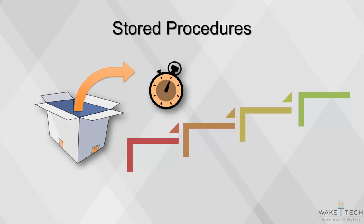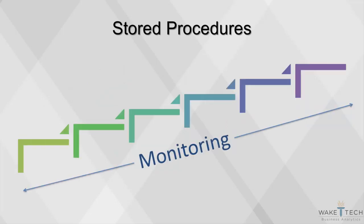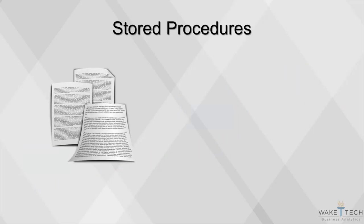Instead of an analyst having to replicate an analysis manually every time new data is captured, a stored procedure will execute. The stored procedure is a type of algorithm that runs according to a schedule and executes a series of steps that the analyst sets up in advance. Usually these steps will be in the form of code, but new software programs allow analysts to build stored procedures without having to write code. Once code has been productionalized, only monitoring the execution of the stored procedure is necessary. When the procedure completes with an error, the analyst will need to troubleshoot the code. The most common reason for errors to arise are due to unforeseen data values.